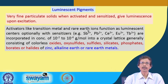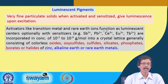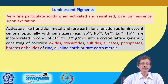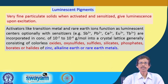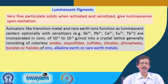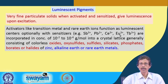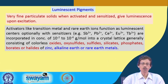Transition metal ions or rare earth ions (lanthanoids) can function as luminescent centers. Like cobalt doping, materials can be doped with transition metal ions or rare earth ions. Sensitizers used include lanthanoid compounds — cerium, europium, and terbium — as well as trivalent antimony and bivalent lead, incorporated at very low concentrations of 10⁻² to 10⁻⁴ grams per mole.